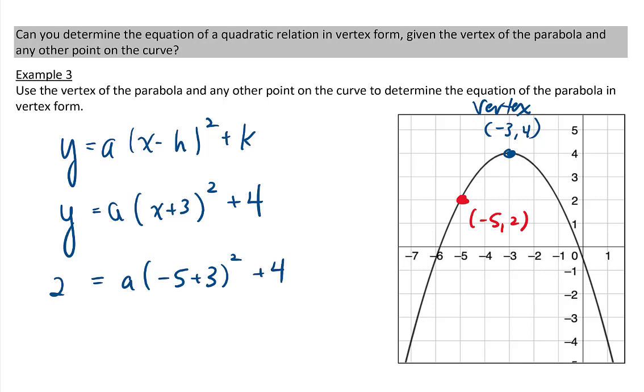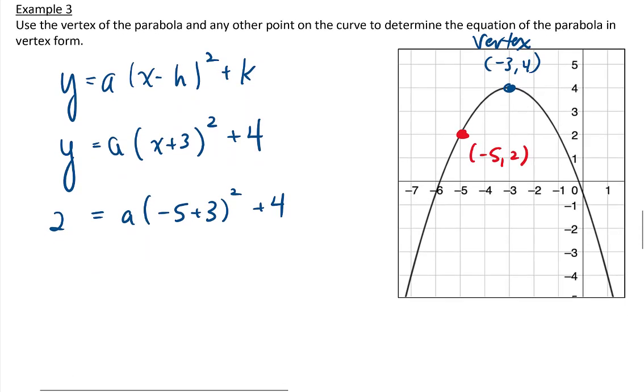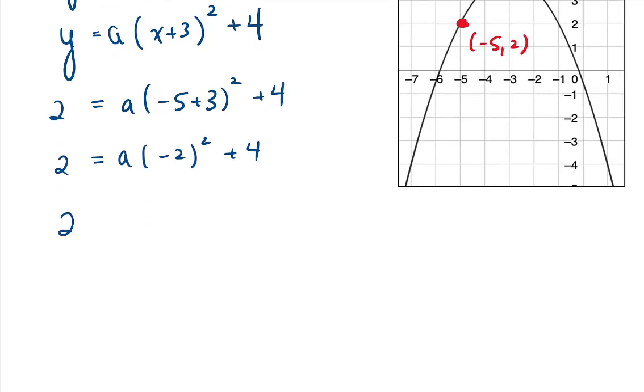And then using order of operations, we can solve for our a value. So we get 2 equals a times negative 2 squared plus 4. So 2 equals 4a plus 4. We need to minus 4 from both sides, so we get negative 2 equals 4a. Divide by 4 on both sides, and we end up with a equals negative 1 half.